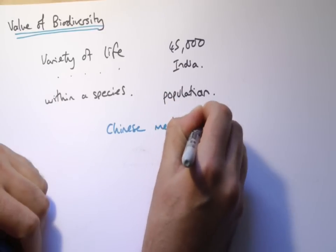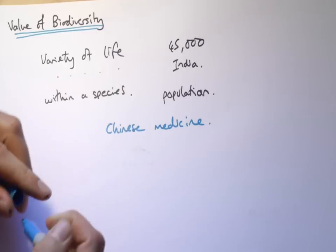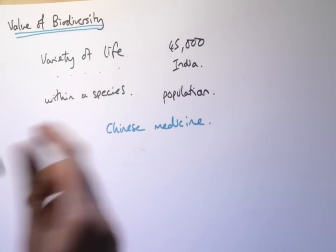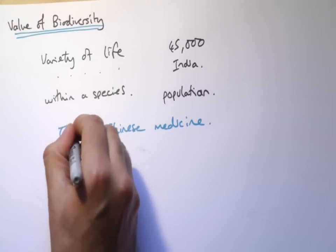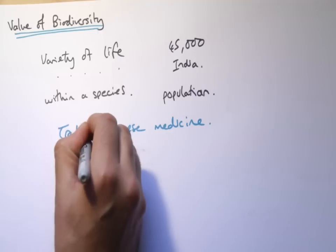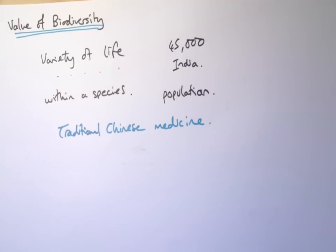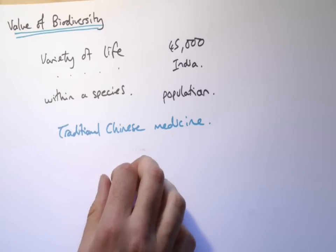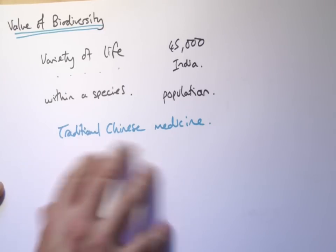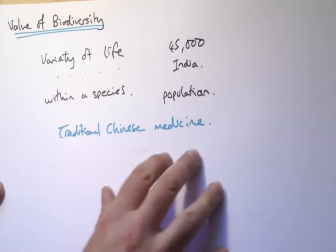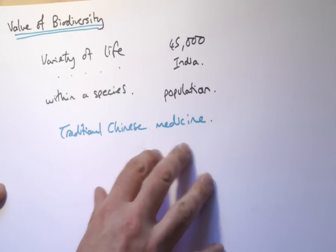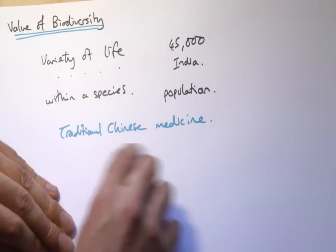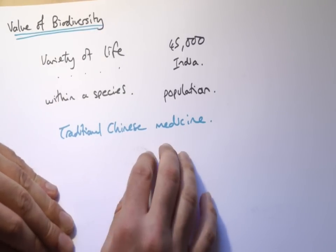Something that also proved a problem was that tiger parts are used in traditional Chinese medicine, where people believe that certain parts of the tiger could be used to make medicines that would do all kinds of things. We wouldn't use this kind of medicine for treating things in hospitals, but it is still used in parts.